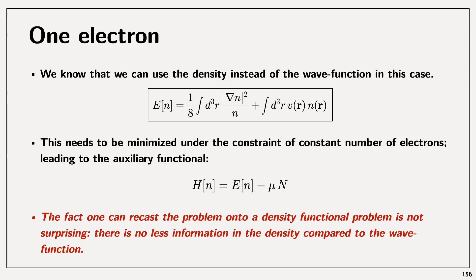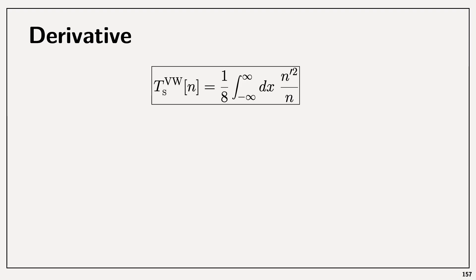The fact that we can recast the problem using the density functional is not really surprising, because since the density is just the square modulus of the wave function, there is the same amount of information in the two representations. Of course we lose the complex part of the wave function, but since in this case it's real it's not an issue. We can now calculate the functional derivative of the energy using the functional derivatives we discovered in the separate screencast.